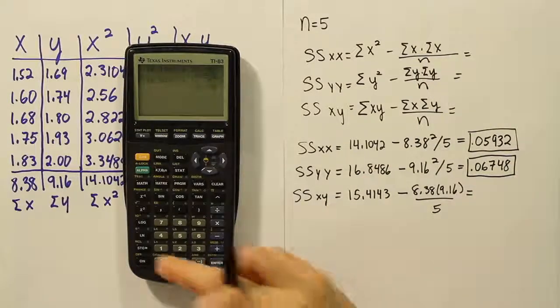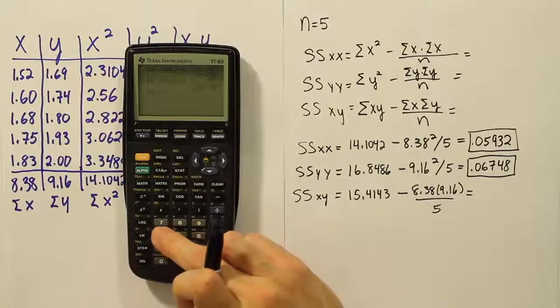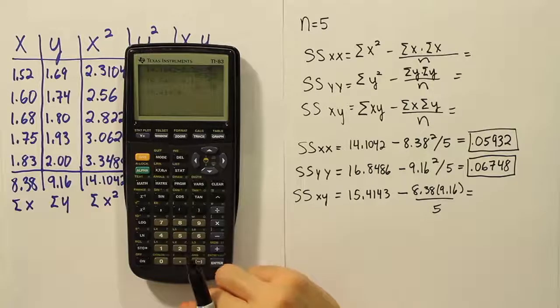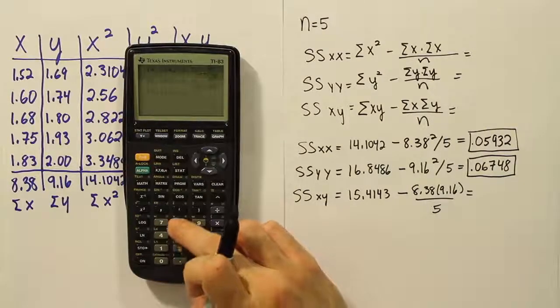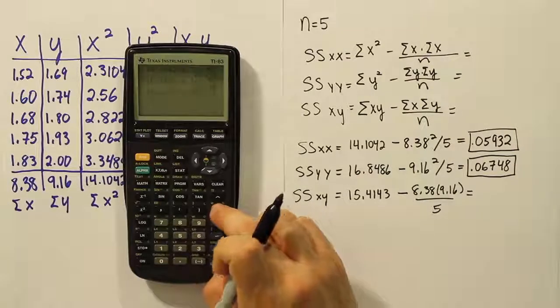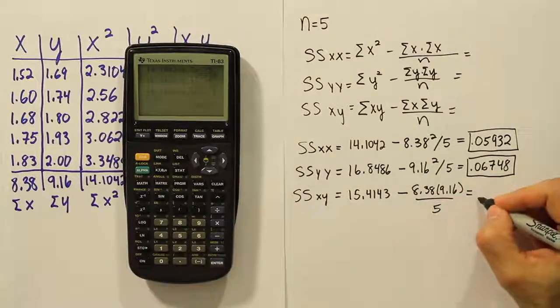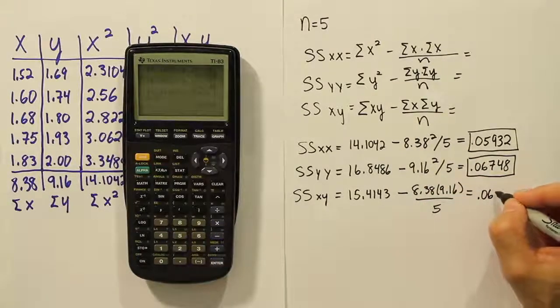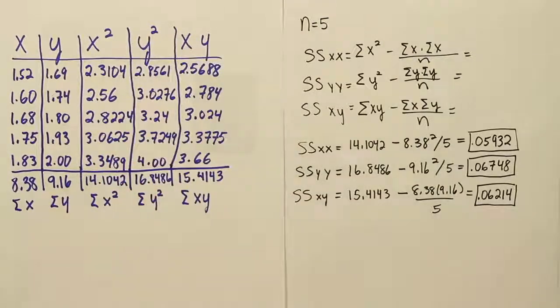And then one last piece here, 15.4143 minus 8.38 times 9.16 divided by five. And we get the answer 0.06214. So there are our values all laid out for us.